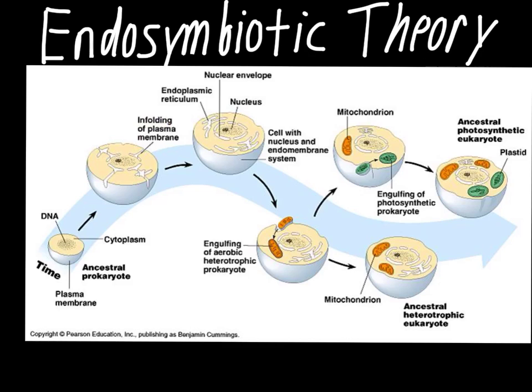Part of that enfolding would become the nuclear membrane, which has pores in it — those are the nuclear pores. And then you have the endoplasmic reticulum, which has that maze-like structure. It's made out of the same phospholipids that make up the outside of the cell membrane. So those two structures are pretty easily explained once you understand endocytosis and the cell enfolding part of that membrane to bring something into the cell.